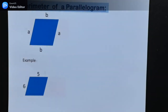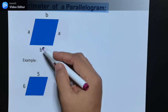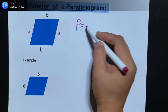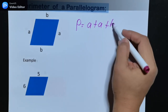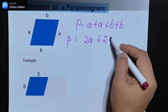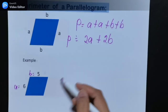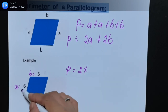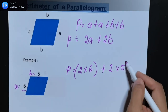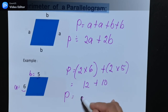Next, perimeter of a parallelogram. The perimeter of a parallelogram is the same as the perimeter of a rectangle. We have sides A and B, so the perimeter is A plus A plus B plus B, or 2A plus 2B. From the example, A = 6 and B = 5. So the perimeter is 2 times 6 plus 2 times 5, which is 12 plus 10. The perimeter is 22.